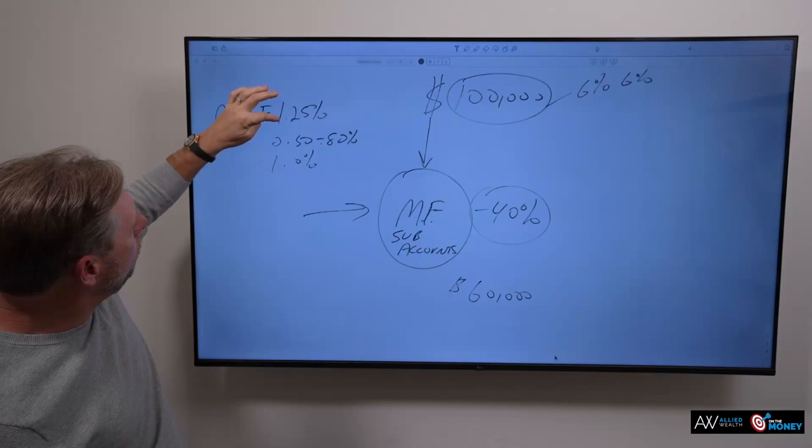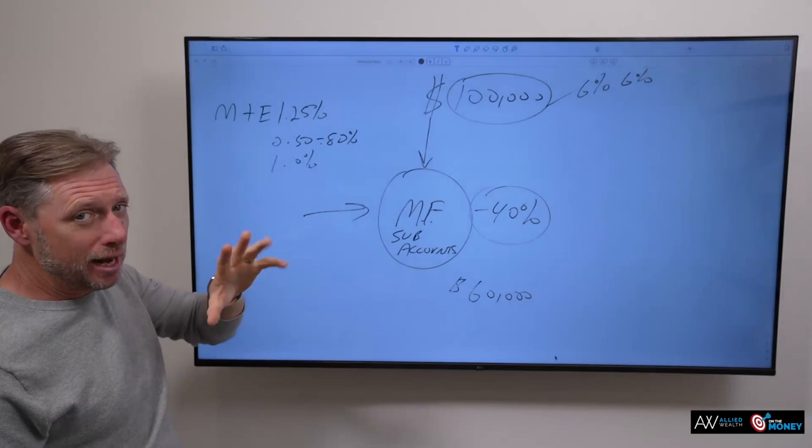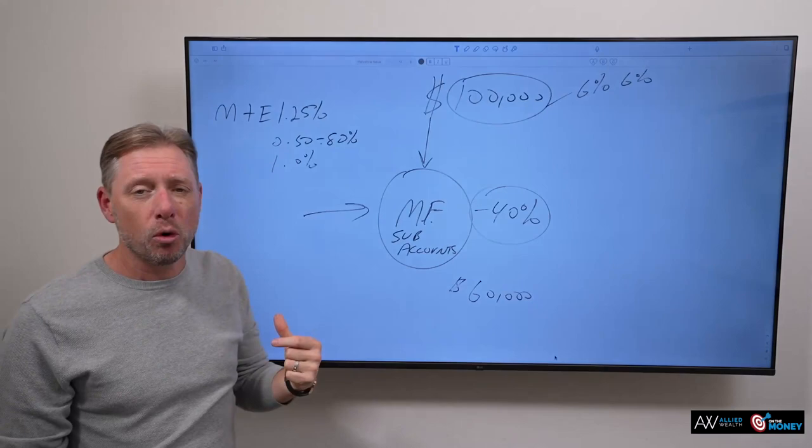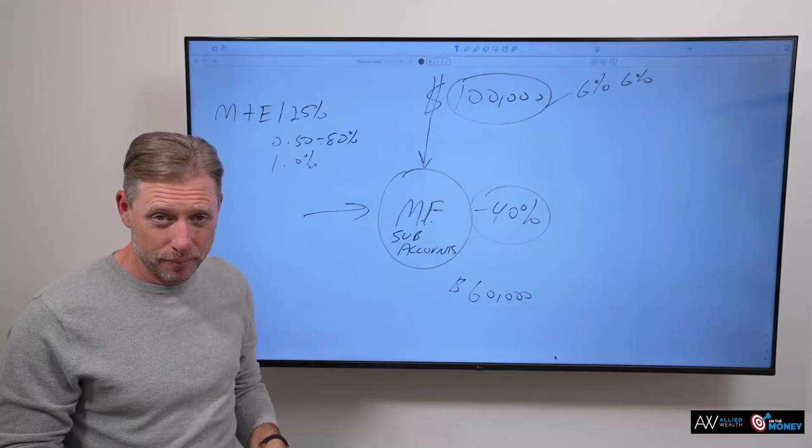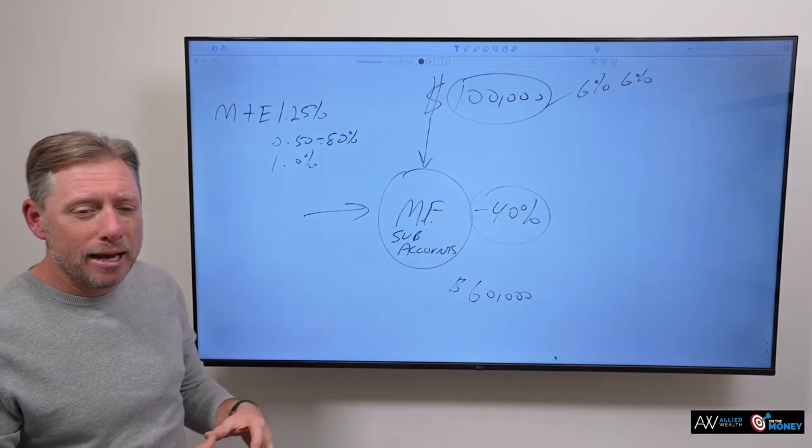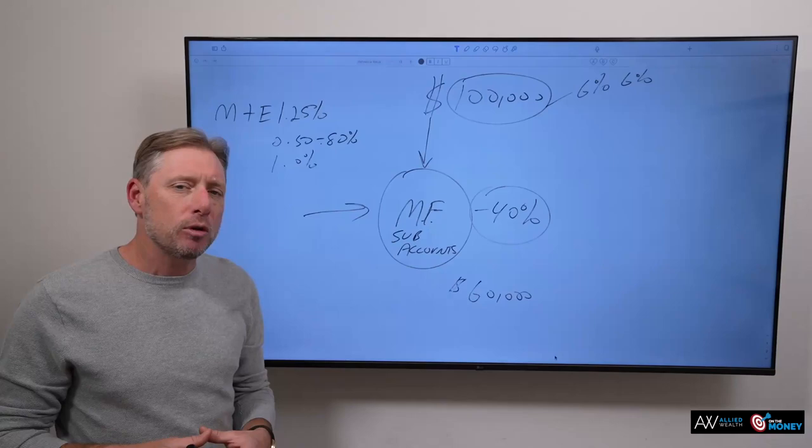All right. So, folks, look. We're already on the low side here at 2.75, excuse me, 1.25 for M&E, 0.5% for the death benefit enhancement rider. Because you've got to have that death benefit enhancement on there. So, that's 1.75. And then another 1% for the sub-account expenses. So, we're already at 2.75%. All right. Now, the next thing you could do is you could have what's called a guaranteed minimum withdrawal benefit.